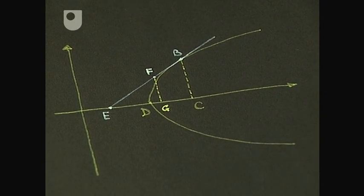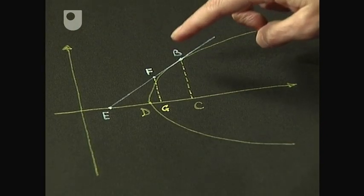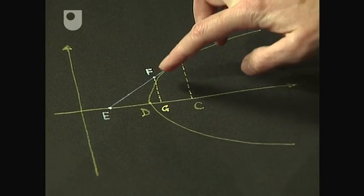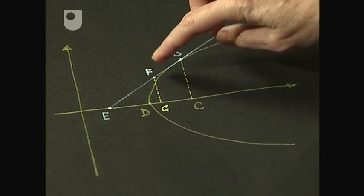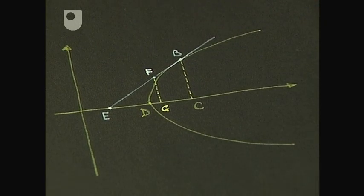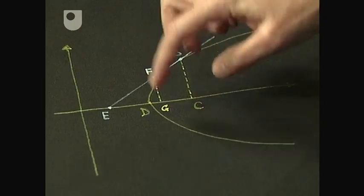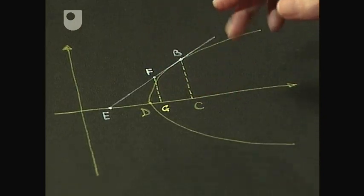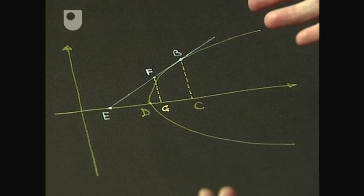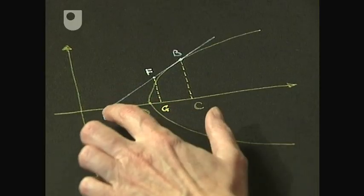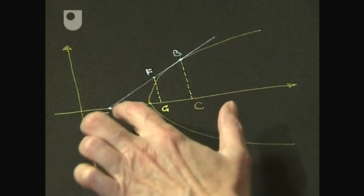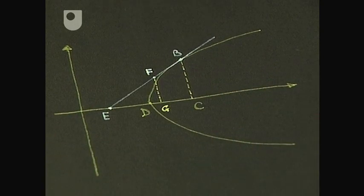He considers a second point F on the tangent, which is very close to B and also very close to the parabola. The distance between the tangent and the parabola is very small. So again Fermat can adequate the two values for y. Then he does some manipulation again and applies exactly the same algorithm as before, finding that the subtangent EC is twice the length of DC in the case of the parabola.